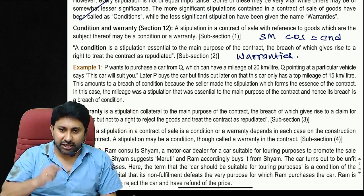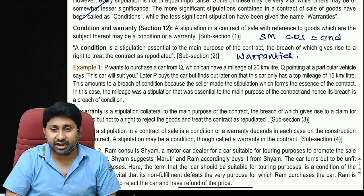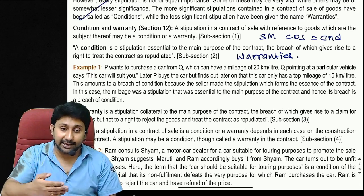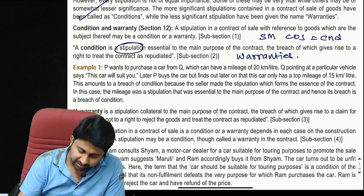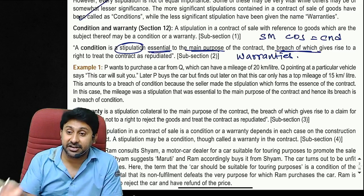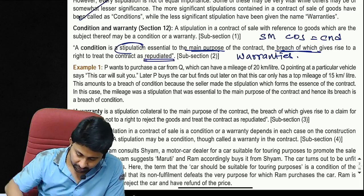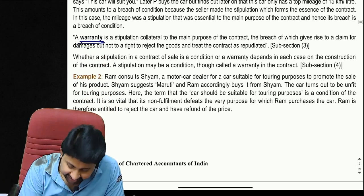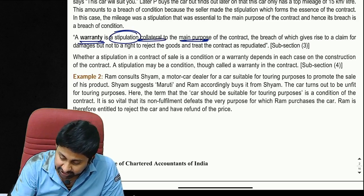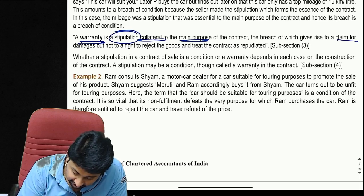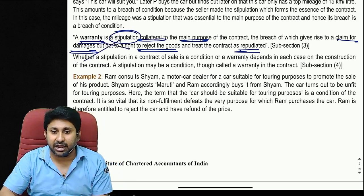A condition is a stipulation essential to the main purpose of the contract; its breach gives the right to repudiate (cancel) the contract. A warranty is a less serious stipulation, additional to the main purpose; its breach gives only a right to claim damages, not to reject the goods or treat the contract as repudiated.